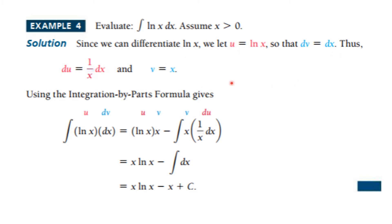We integrate both sides to get v equal to x — the constant is 0. So the integral of u dv is equal to u times v minus the indefinite integral of v du. Notice that x times 1/x is 1, so we're just integrating dx. That gives x ln(x) minus x plus c, and the constant of integration must be there.